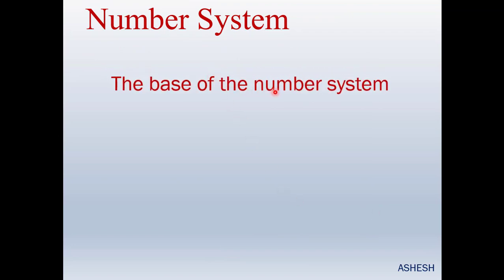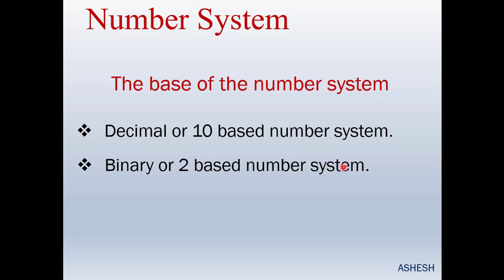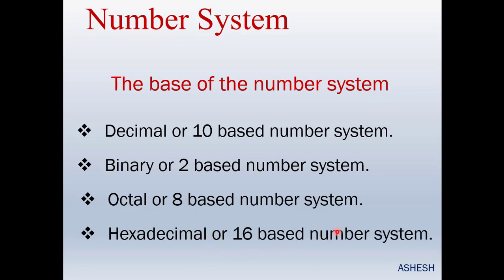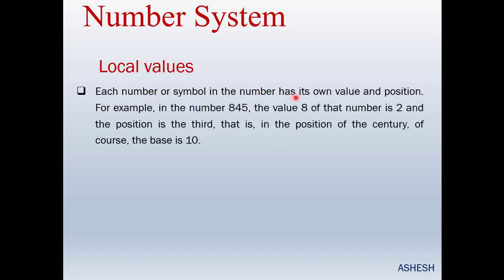The second condition is the base of the number system. Decimal is a base-10 number system. Binary is a base-2 number system. Octal is a base-8 number system. Hexadecimal is a base-16 number system. Each number or symbol in the positional number system has its own value and position.